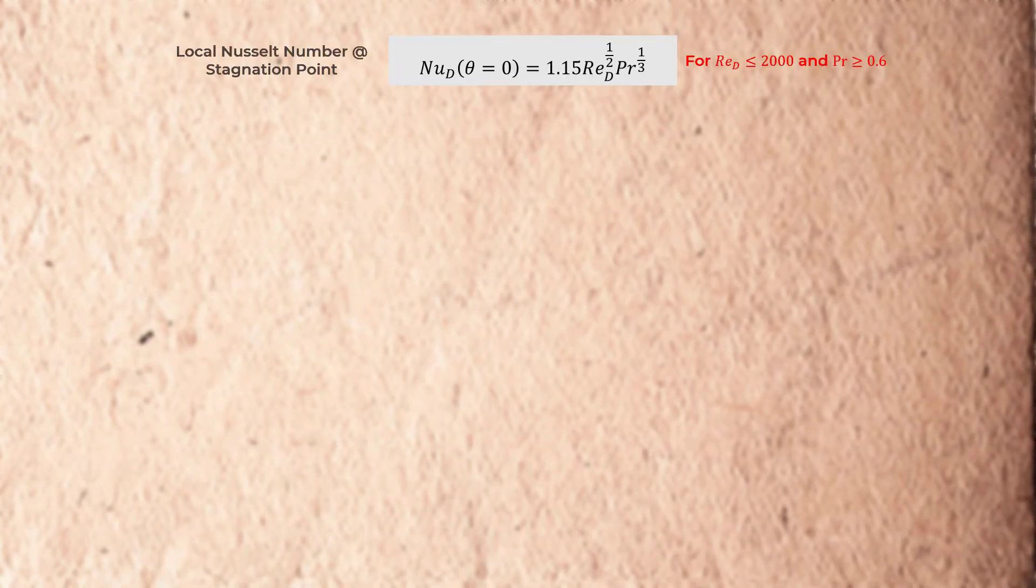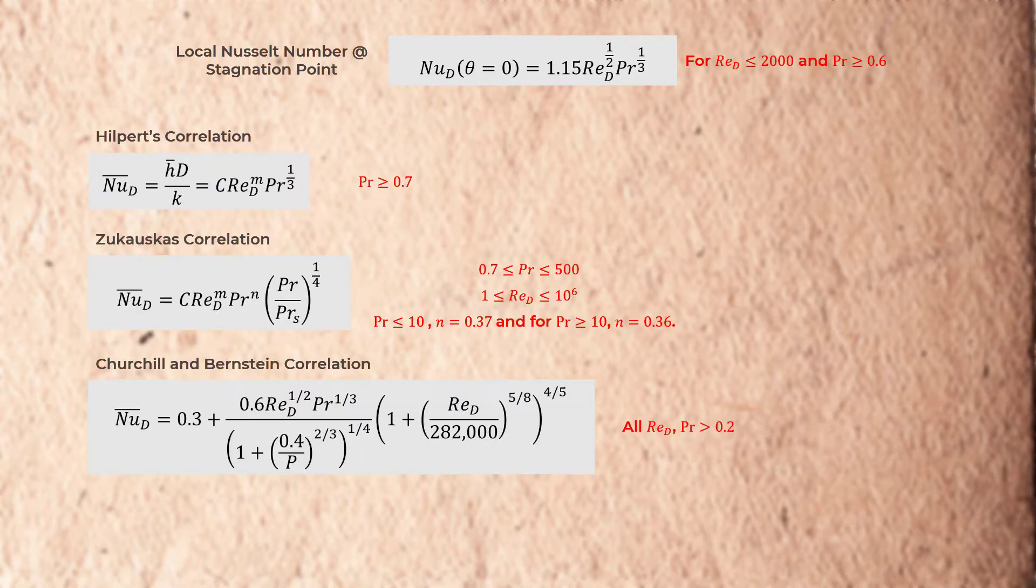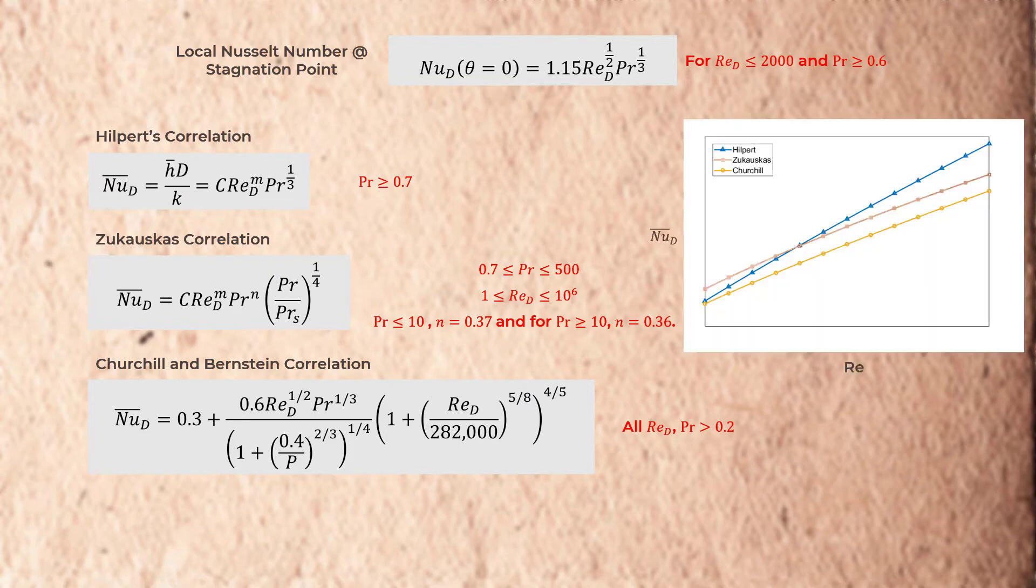For low Reynolds number flows, that is Reynolds number less than 2000, and for Prandtl number greater than 0.6, one can use the following correlation to calculate the local Nusselt number at the stagnation location. Different researchers have proposed correlations which are valid for specific situations to calculate the average Nusselt number. The most frequently used ones are proposed by Hilpert, Zukauskas, and Churchill and are plotted here on this graph.